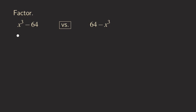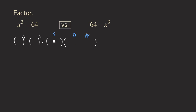Let's write down the formula again: something cubed minus something cubed equals a binomial times a trinomial. Using SOAP: Same sign gives minus in the binomial, Opposite gives plus in the trinomial's middle term, and Always Positive gives plus at the end. Fill in A in each A position and B in each B position, and don't forget the squares on the first and last terms of the trinomial.